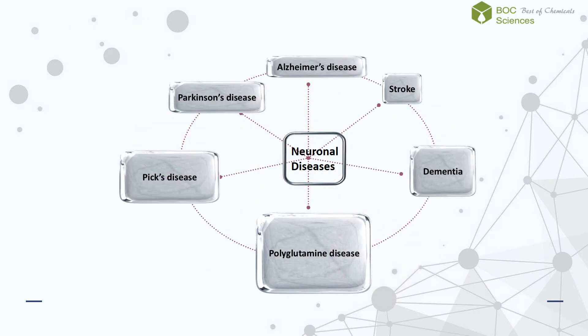Among the neuronal diseases, JNK has been shown to be activated in neurons of Alzheimer's disease, Parkinson's disease, stroke, polyglutamine disease, Pick's disease, corticobasal degeneration, dementia with argyrophilic grains, and amyotrophic lateral sclerosis, to name a few.